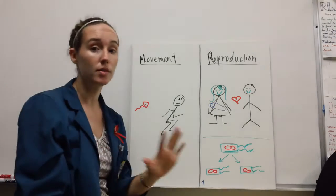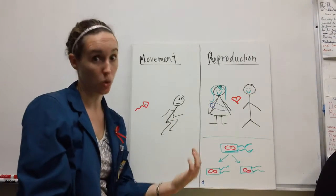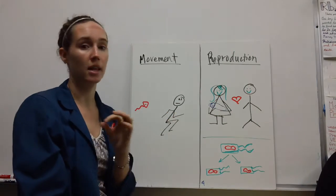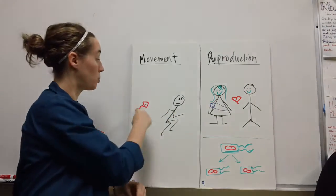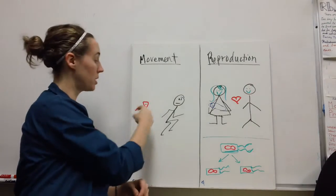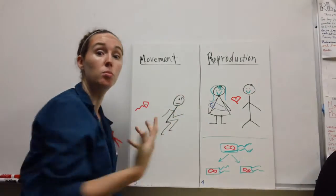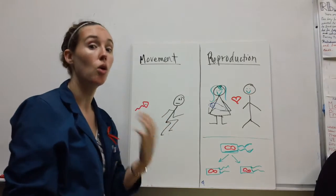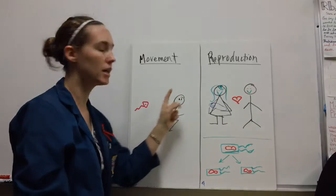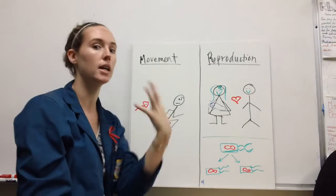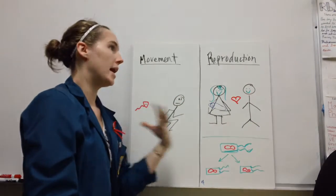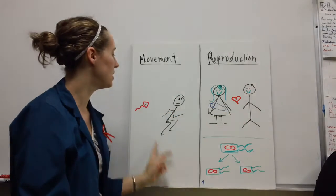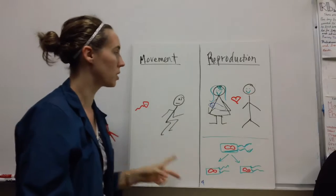Next, all living things at some stage in their life move. This can be anything from a small organism like a sperm cell or a paramecium that has some little movement structures on it, or something as complex as running or blinking. Any time an organism can move, this lets us know it's living.